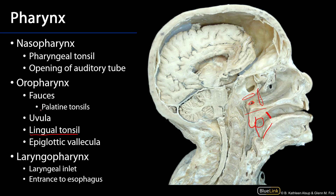Not only do we have the palatine tonsils but we have the lingual tonsils in the oropharynx. Here's the epiglottis rising up, and there are two scoops between the epiglottis and the root of the tongue called the epiglottic valleculae — valleculae plural, vallecula for just one. This is a region where saliva can gather and not trigger the deglutition or swallowing reflex.